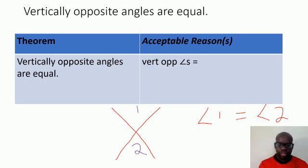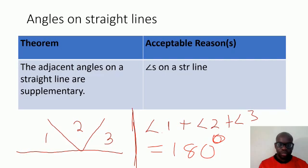Let us go to Theorem Number 2: angles on straight lines. The theorem says the adjacent angles on a straight line are supplementary. What does that mean? It means if you add the angles on one side of the straight line, the answer is 180 degrees. So the word supplementary simply means 180 degrees.